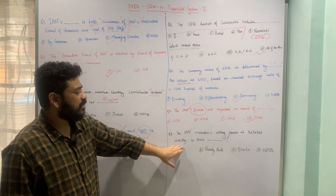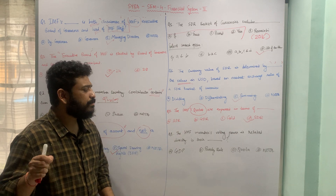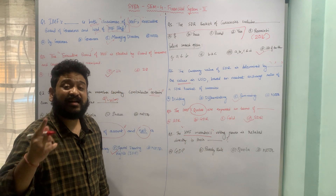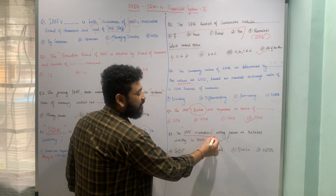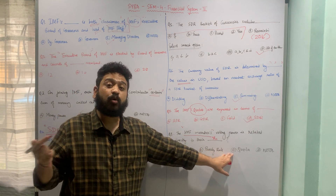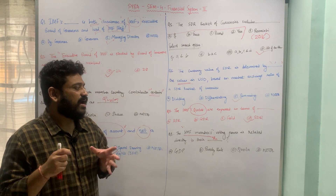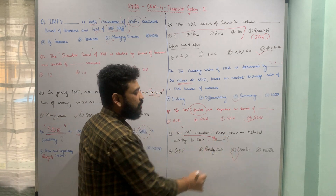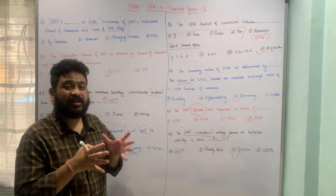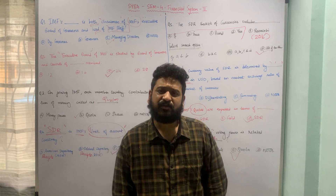The last question on IMF: the voting power of IMF members is directly related to what? Whether it is their GDP, their poverty rate, their quotas, or none of the above. The correct answer is C — IMF members' voting power is directly related to their quotas. This is how we assess the power of a particular country in the IMF — it depends on their quota or SDR. I hope the questions on IMF are clear. Please stay tuned for more. Thank you.